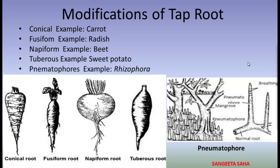Next coming to the modifications of tap root. In some plants with the tap root system, extra food is usually stored by the primary root, due to which the roots get swollen, resulting in the formation of different shapes as you can see in the diagram. Tap roots of carrot and turnip, and adventitious roots of sweet potato, get swollen and store food. Depending upon their shapes, they can be classified into different types.